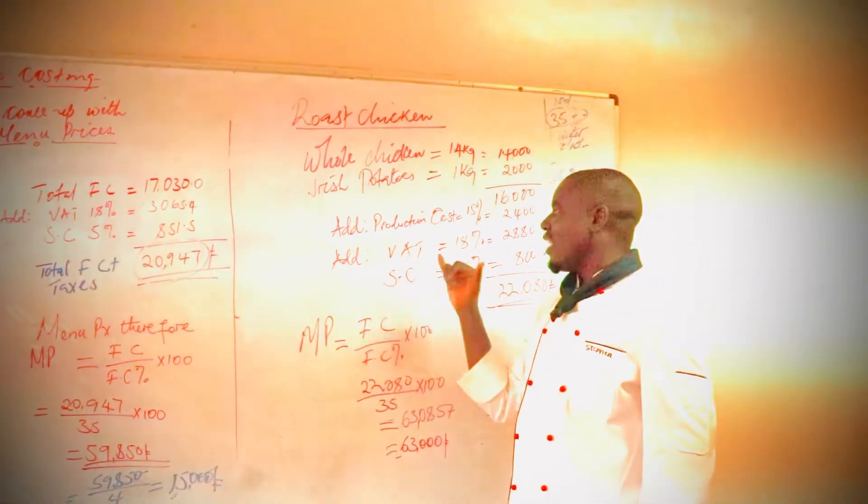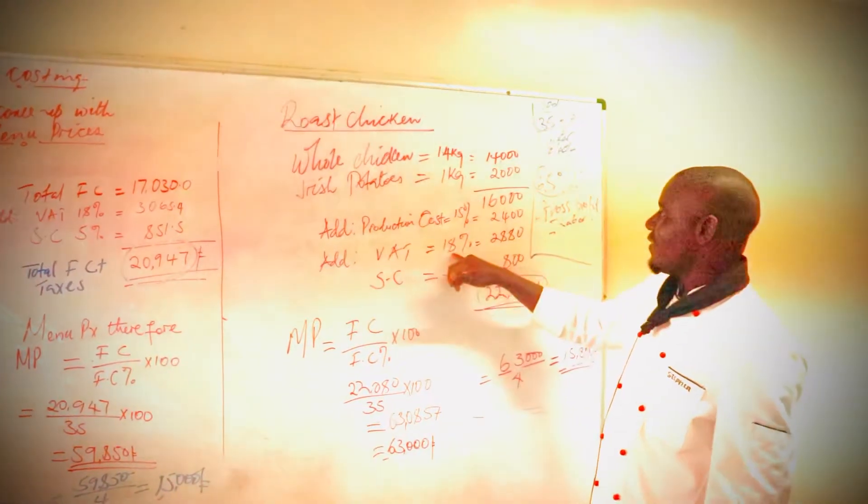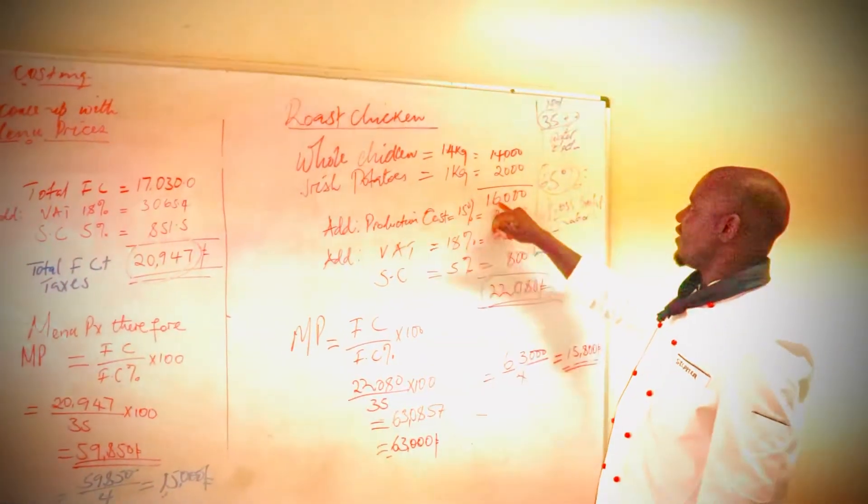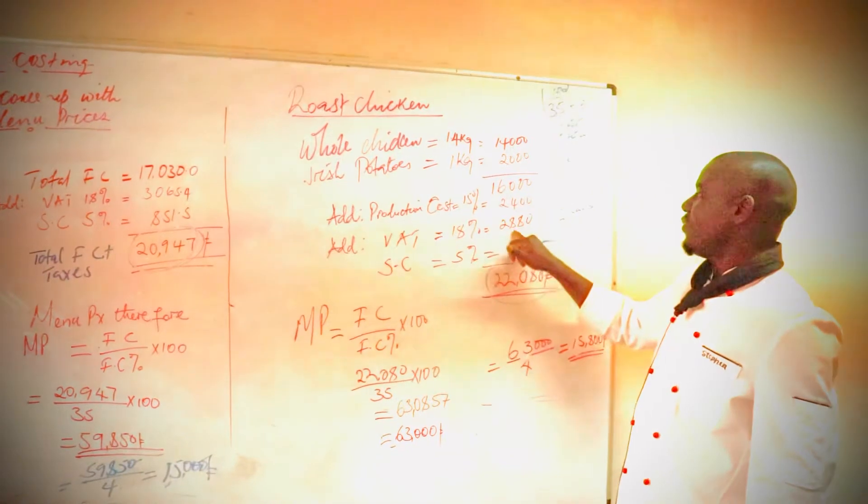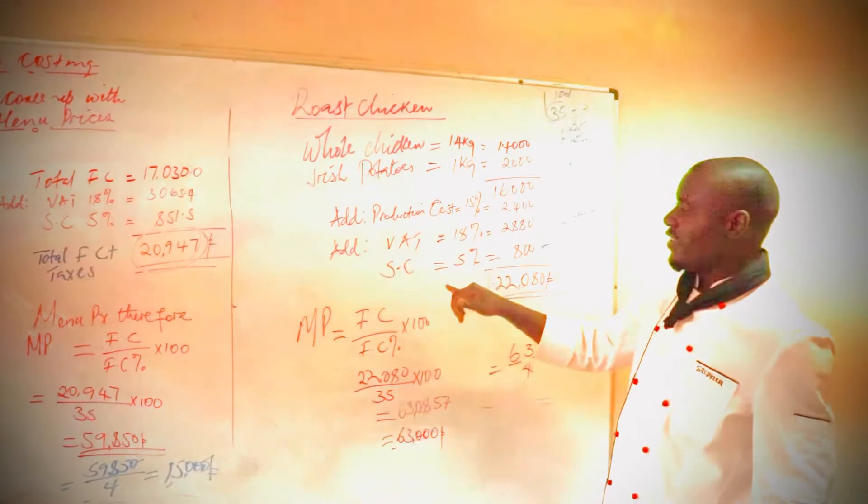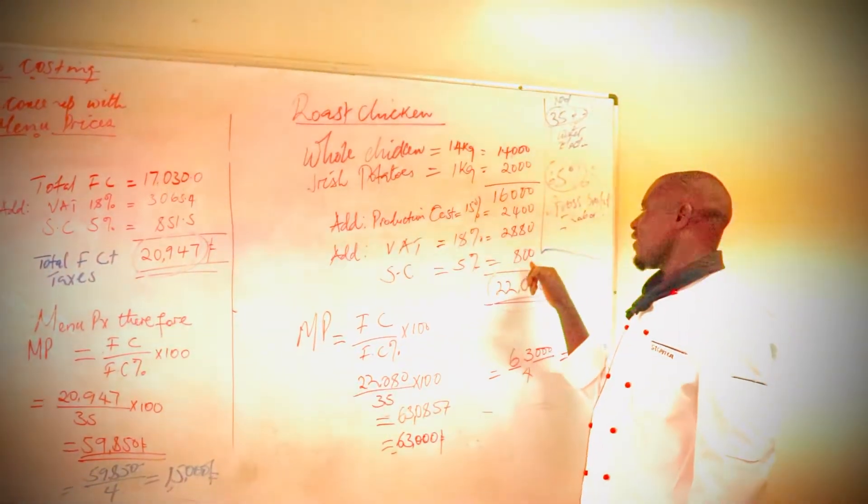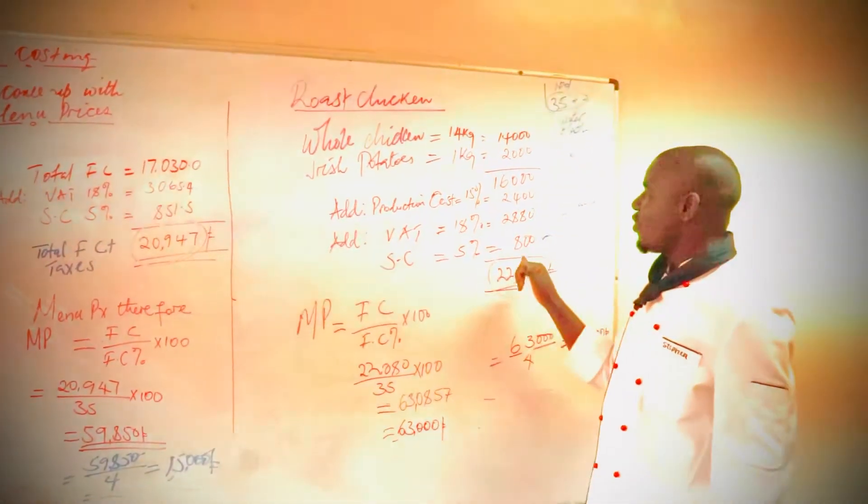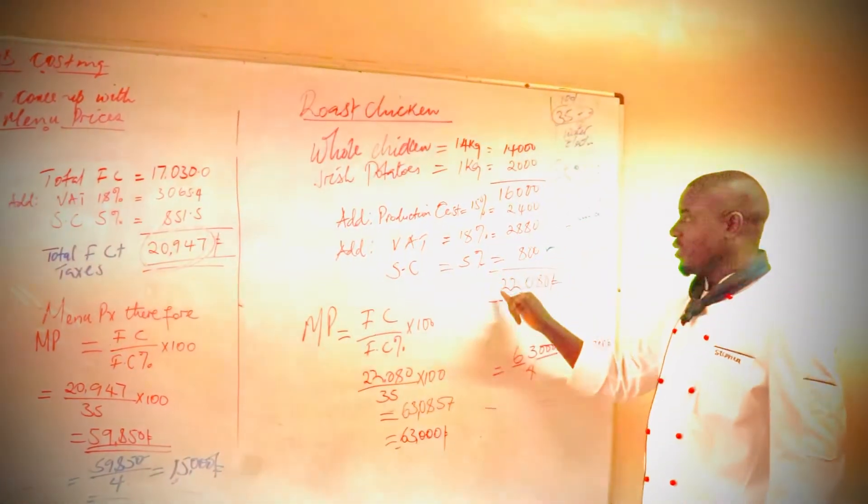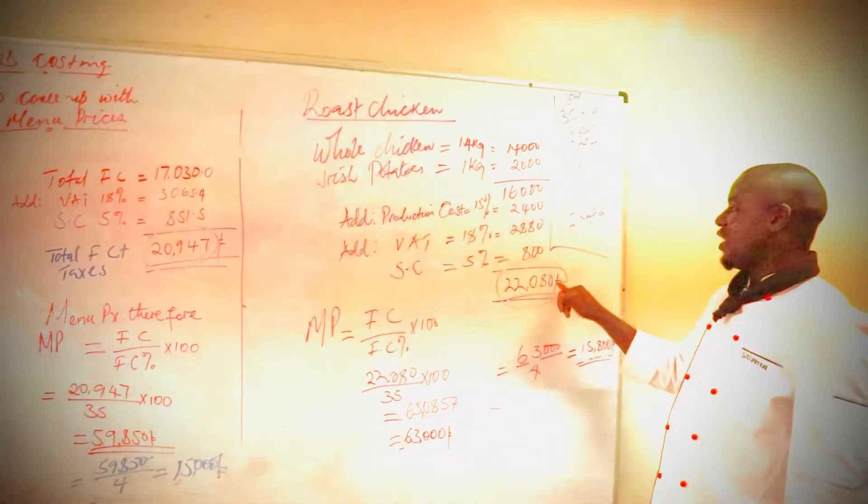So we also add VAT, which is 18%, which will give us 18% of the 16,000, which will give us 2,880. We also add the service charge, service charge is 5%, just like the other side, which will give us 800 shillings.